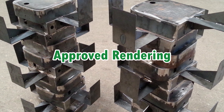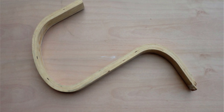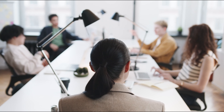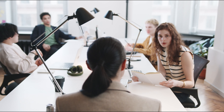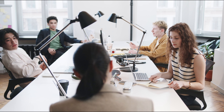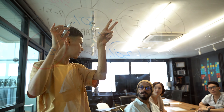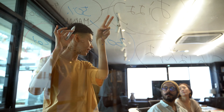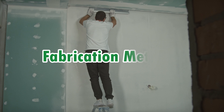Approved rendering: creating an approved rendering of a proposed exhibition is the first crucial step in the fabrication process. It requires intricate attention to detail and extensive communication between designers and clients. Like a mosaic coming together, each individual piece must fit perfectly into place for the final product to be complete. Designers produce concept drawings that capture the overall vision for the project, helping the client visualize how the exhibit will look once it's been built.